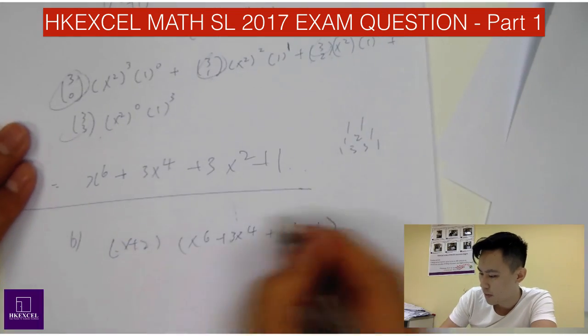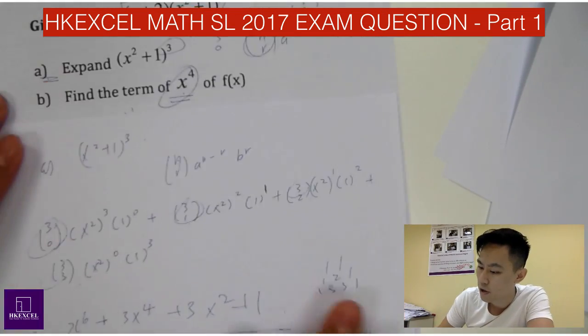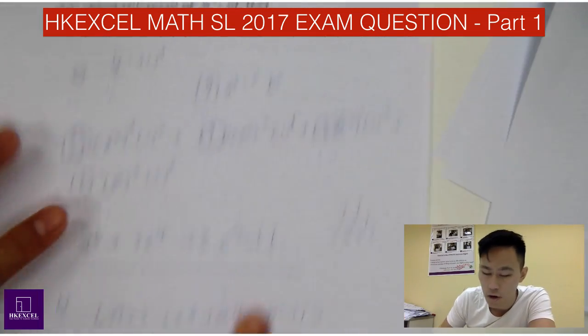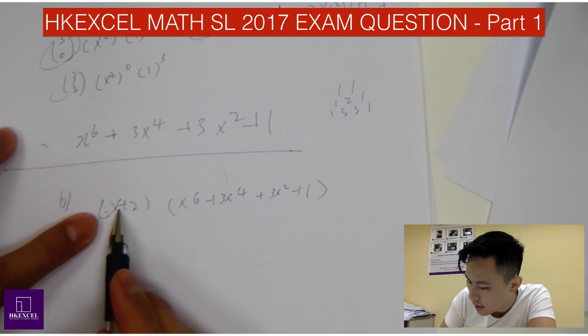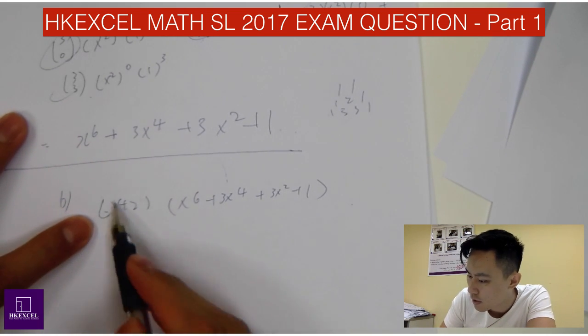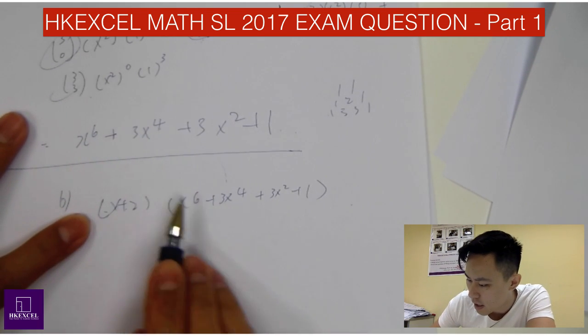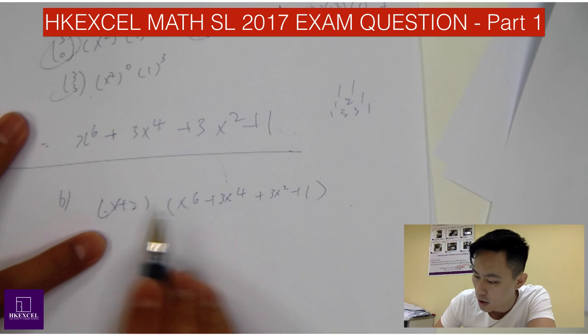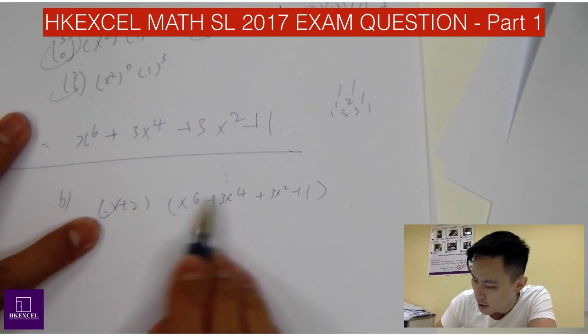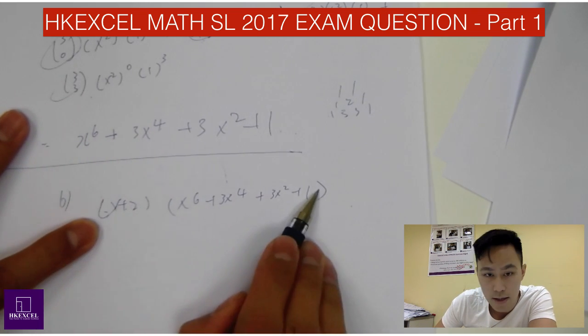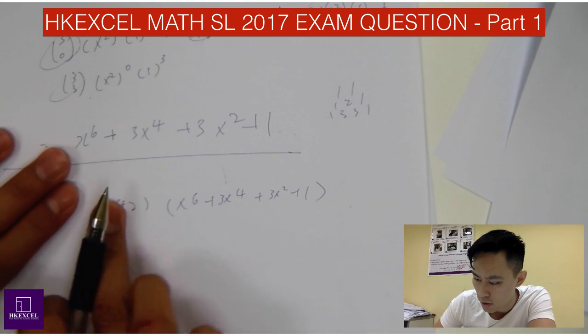So obviously you don't want to expand all that because it's too long. So there's a fast way to find x power 4. So we can just look at x multiplied with something. So do you get x power 4? So x times this, you have x^7, so you can ignore that. And then x times this, x^5, x^3, and then x. You don't have x^4, so you can ignore this part.